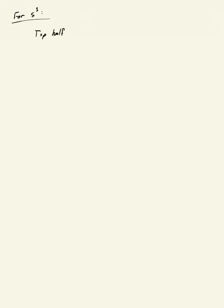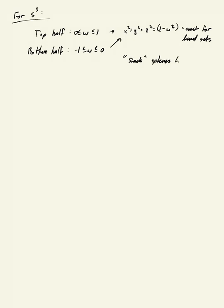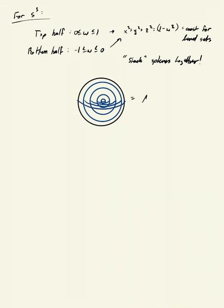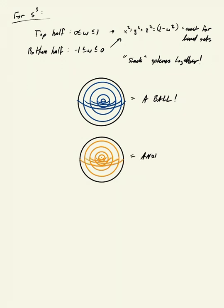We'll play the same game for S³. We'll have a top half for values of w between zero and one, and the bottom half for values of w between minus one and zero. Let's see what happens if we set w equal to some constant. Then one minus w squared is still a constant, and this constitutes a level set. The level sets here are spheres. Stack these spheres together in some consistent way. For w between zero and one, we get all these blue spheres, and when we stack them together, we get a ball. Playing the same game in the opposite direction for w between minus one and zero, you stack these together and get a second ball.